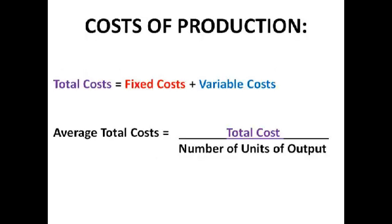Moving on now to costs of production. You can calculate total costs by adding fixed costs to variable costs. Fixed costs are costs of production that don't vary as output changes, such as rent, insurance charges, salaried staff costs, marketing costs, costs of new capital equipment, and depreciation of capital equipment. They don't change because you need them whether you're producing 10 units a week or 50 units a week.